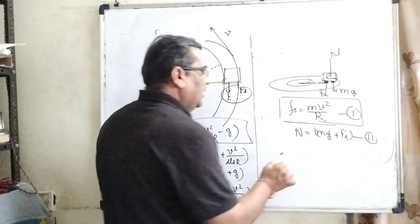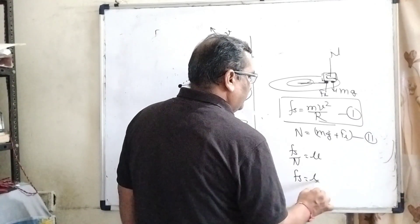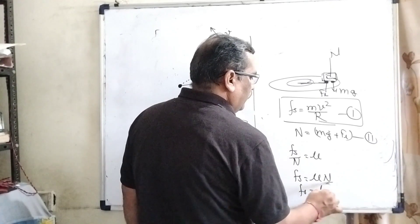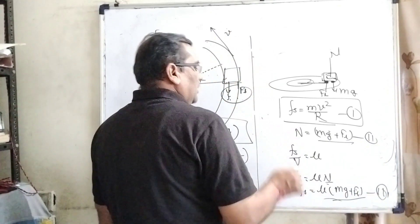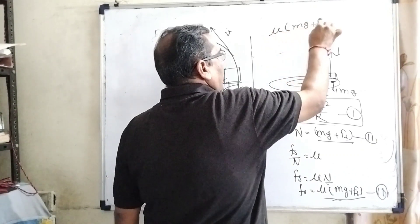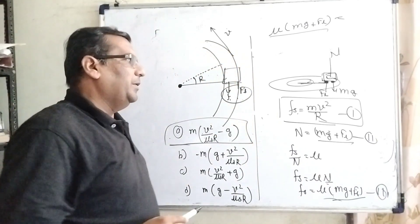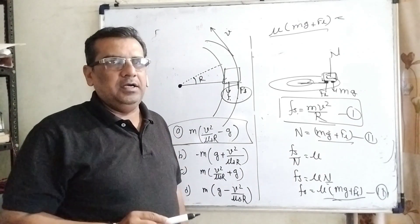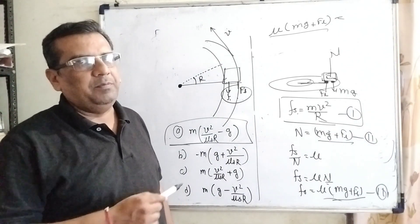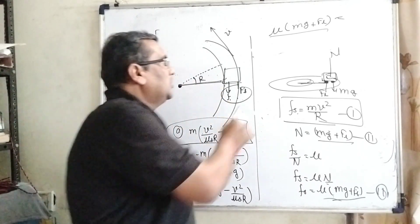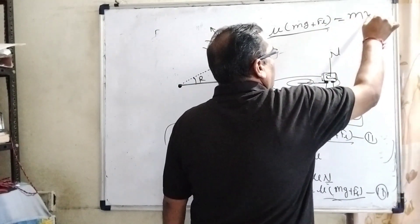From the laws of friction, fs divided by N equals μ, where μ is the friction coefficient. So fs equals μ times N, and the value of N is mg plus fl — that is the third equation. Now since frictional force equals centripetal force from the first condition, we have μ times (mg + fl) equals mv²/R.